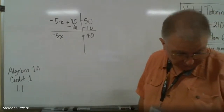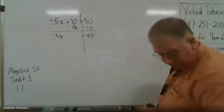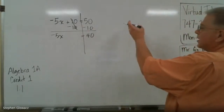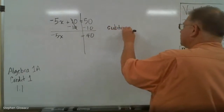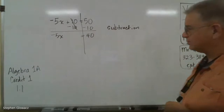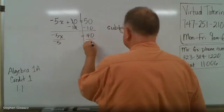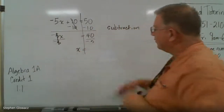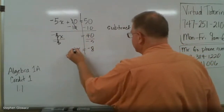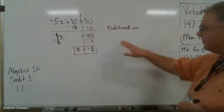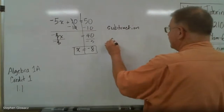Now down below where it says 'justify each step,' the first thing we did was subtraction, so that would be the subtraction property of equality. The words 'property of equality' are already written for you, so all you have to fill in the blank is 'subtraction.' Now x is being multiplied by negative 5, so we're going to divide by negative 5 on both sides. The negative 5s will cancel, and 40 divided by negative 5 — 40 divided by 5 is 8, and a positive divided by a negative is a negative — so our answer is x equals negative 8. The justification for the second step is the division property of equality.